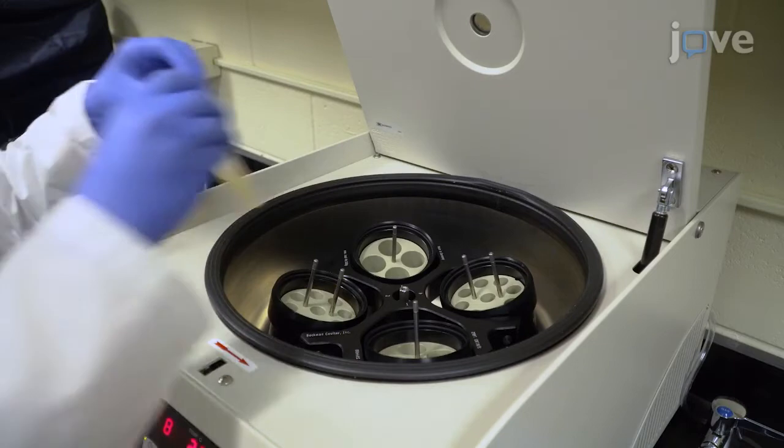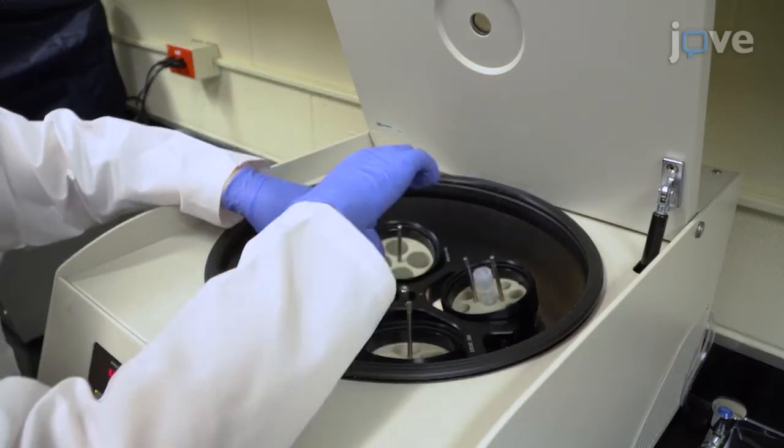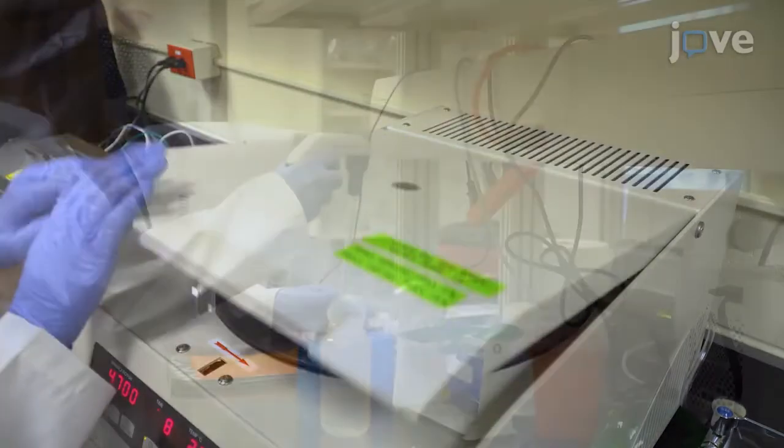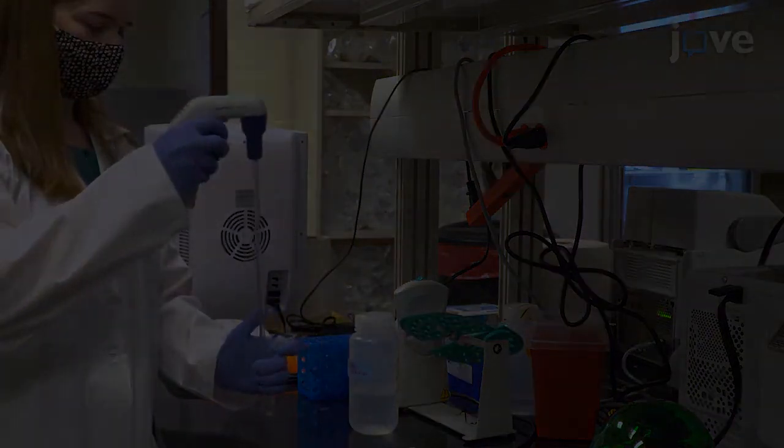When the bacteria have entered the log phase, pellet the bacterial cells by centrifugation and wash the cells three times with filter sterilized PBS.